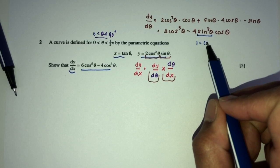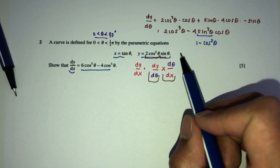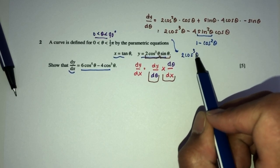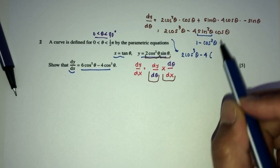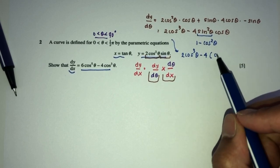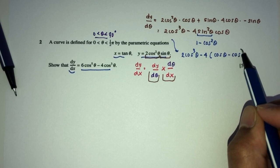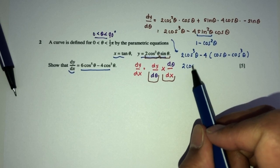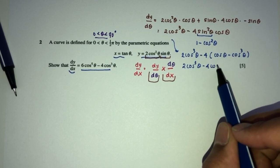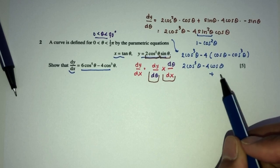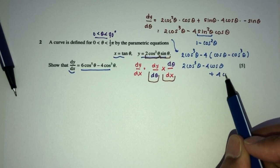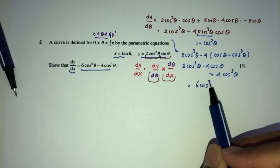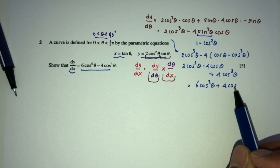This is 1 minus cos squared theta. Now we can simplify. That will become 2 cos cubed theta minus 4 times cos theta times (1 minus cos squared theta), which gives cos theta minus cos cubed theta. That should become 2 cos cubed theta minus 4 cos theta plus 4 cos cubed theta, which gives 6 cos cubed theta minus 4 cos theta.